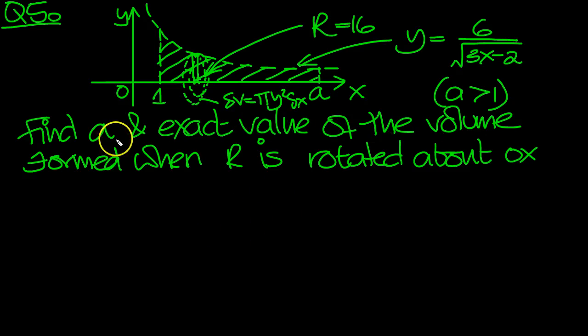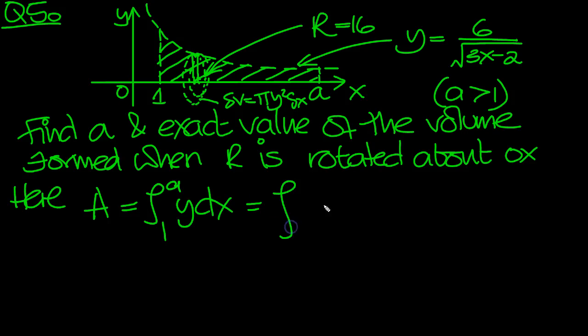So the exact value of, find a first of all, and we're told the area is 16. So here, the area under the curve is simply integral y dx between 1 and a. a is bigger than 1, so that's the integral of this thing here. Square root is power half, so we can move that up to ground level and flip the half to a minus a half. And that would be between 1 and a.